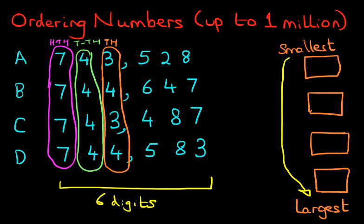What that tells us is the two smaller numbers — both of them are three. It's A and C. Both of these are going to go into the two smallest positions because three is smaller than four. But we do not know whether A or C is going to become the smallest, so we have to take this one step further.